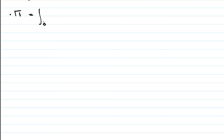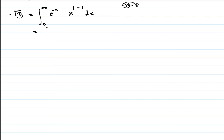Gamma of 1: we write the standard form from 0 to infinity of e raised to minus x. Since gamma is 1, we have x raised to n minus 1, where n equals 1. So n minus 1 equals 1 minus 1 equals 0. This gives us the integral from 0 to infinity of e raised to minus x, dx. By the properties we have used, we know that gamma of 1 is equal to 1.